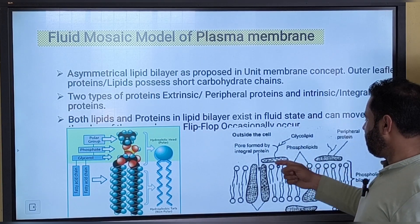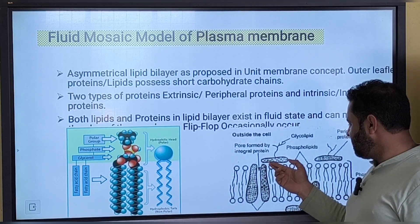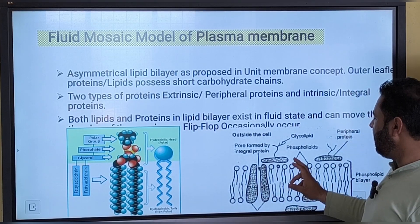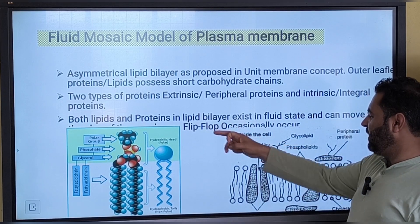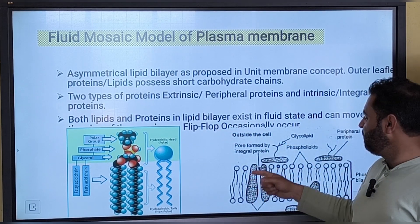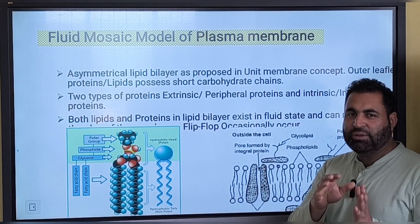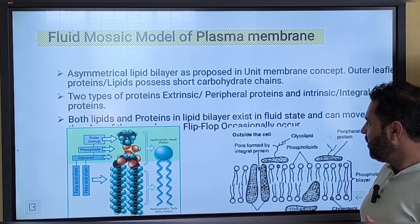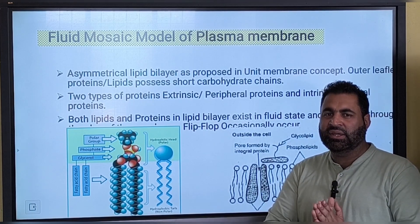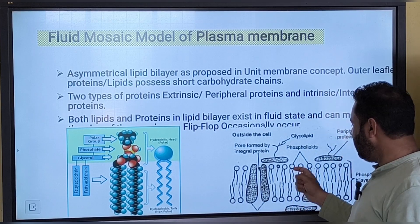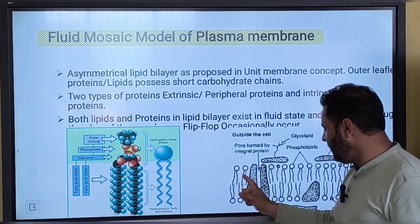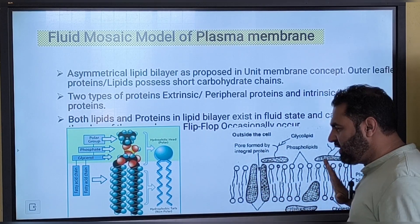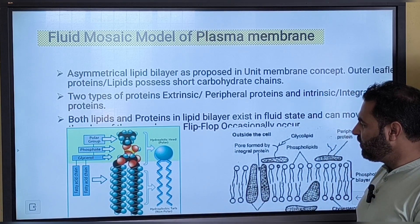These phospholipids and extrinsic proteins can move all along the surface of the plasma membrane — they show fluidity. Some proteins can flip-flop, occasionally moving from the outer leaflet to the inner leaflet. This is called flip-flop movement of the phospholipids or proteins. This membrane acts as a three-dimensional fluid — whatever phospholipids and proteins are there, they show different types of motions including rotational motion and lateral movement along the plane. This is the fluidity of the membrane.